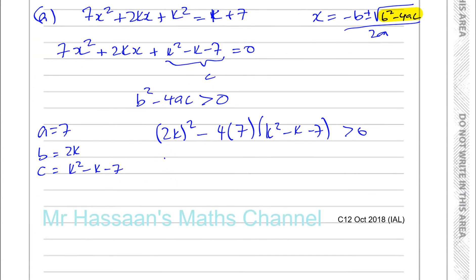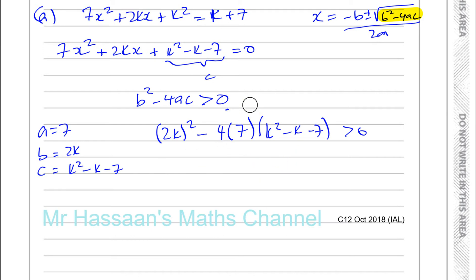(2k)² = 4k². Then we have minus 28 times (k² - k - 7). Be very careful here — being lazy and skipping steps causes mistakes. So we write out: 4k² - 28(k² - k - 7) > 0. Now let's expand the bracket properly.